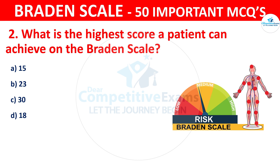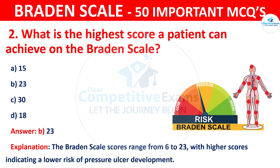The correct answer is B — 23. The Braden scale scores range from 6 to 23, with higher scores indicating a lower risk of pressure ulcer development.